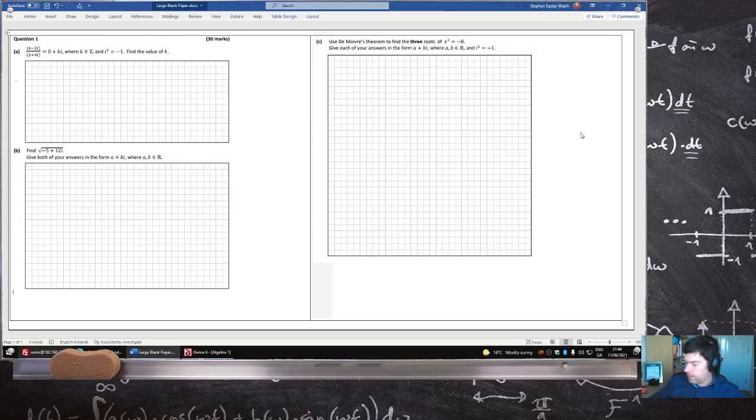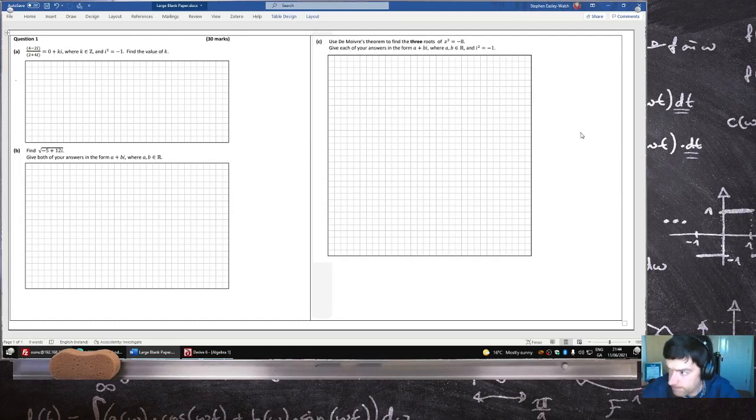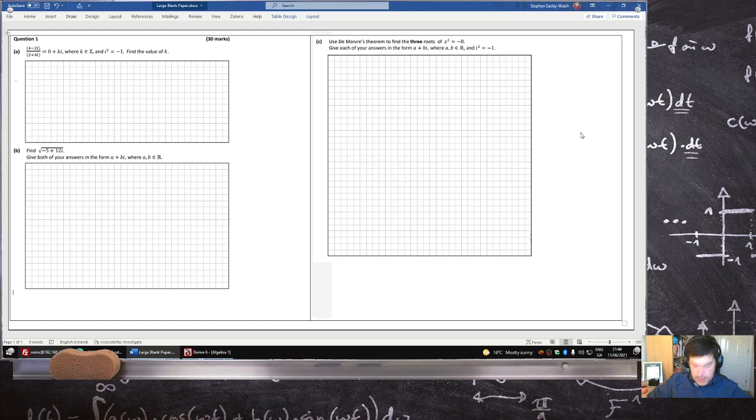Let's have a look at the first question here. Let's simplify this, so 4 minus 2i over 2 plus 4i, multiply above and below by the conjugate, 2 minus 4i over 2 minus 4i.